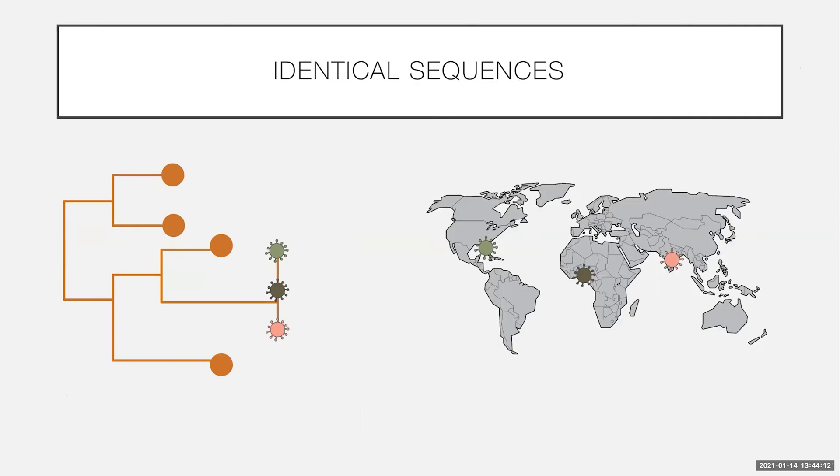So they're not connected in a transmission chain in any meaningful way, but they're still on a polytomy. And the same goes for spatial distribution. We can get identical sequences from all over the world.